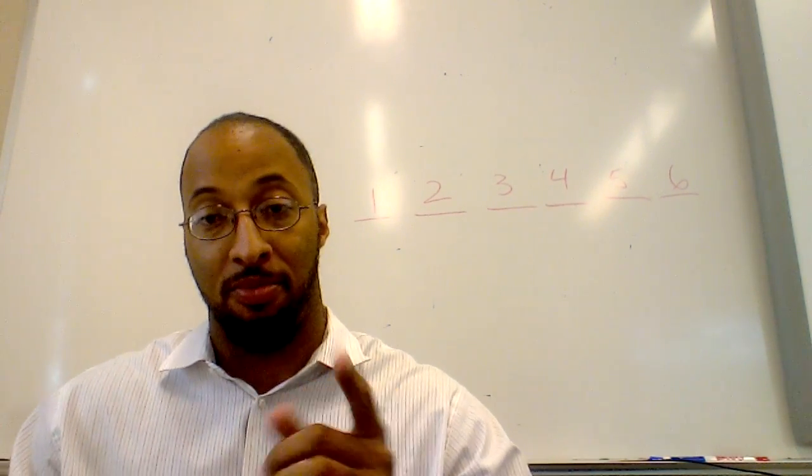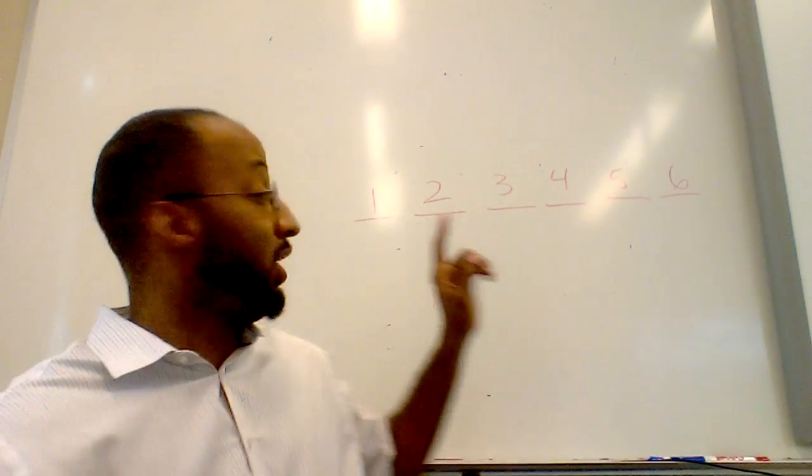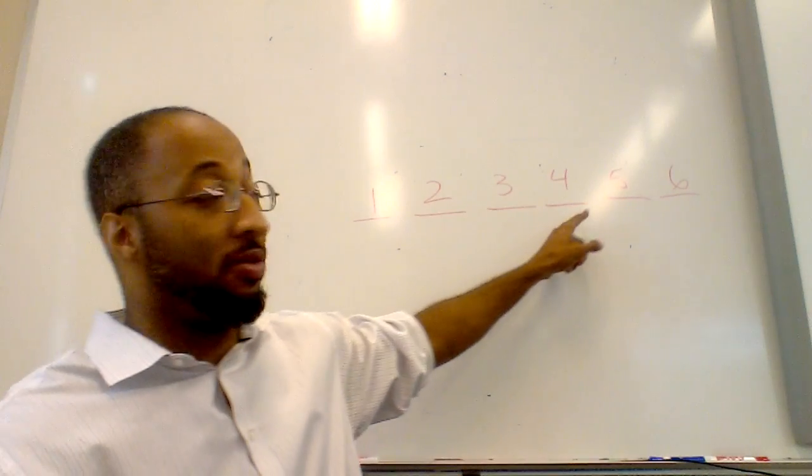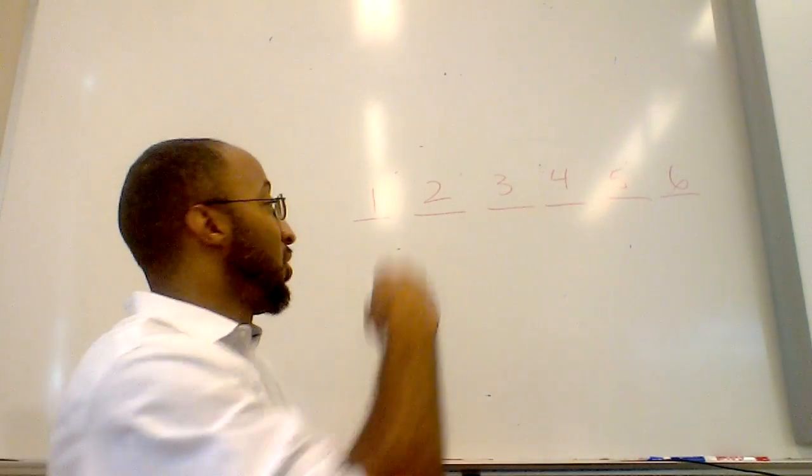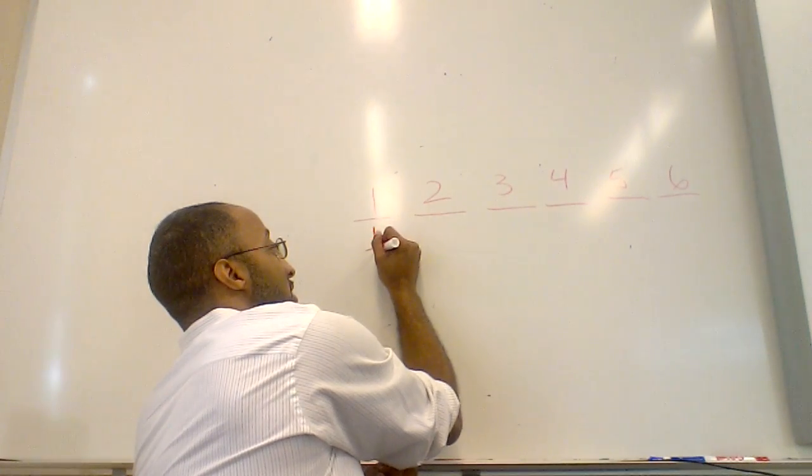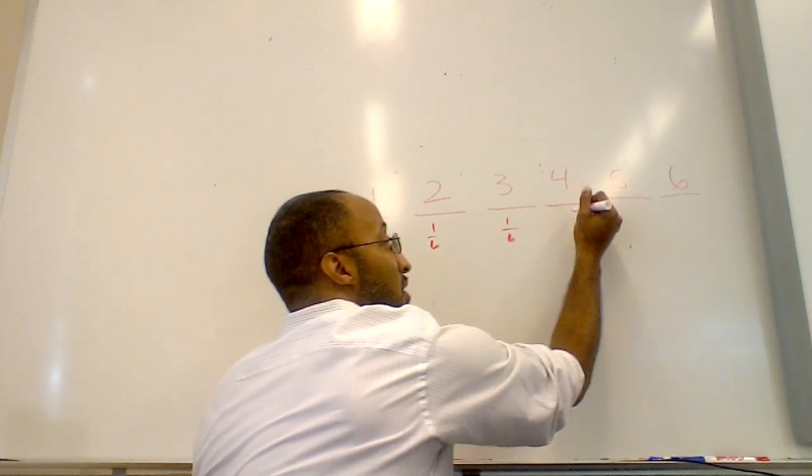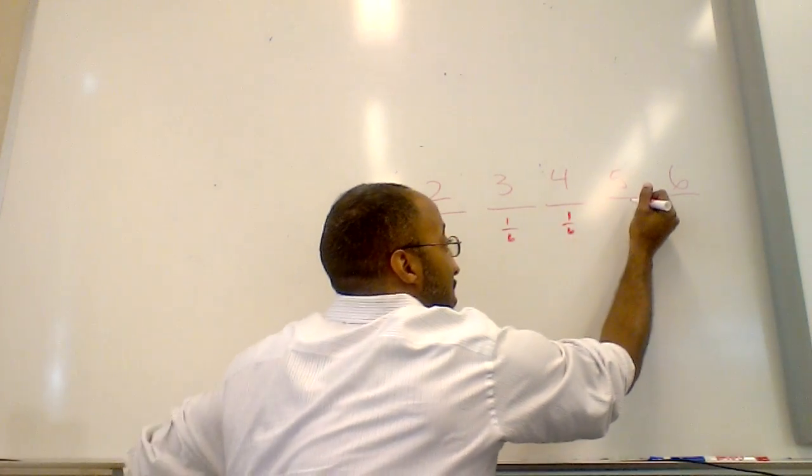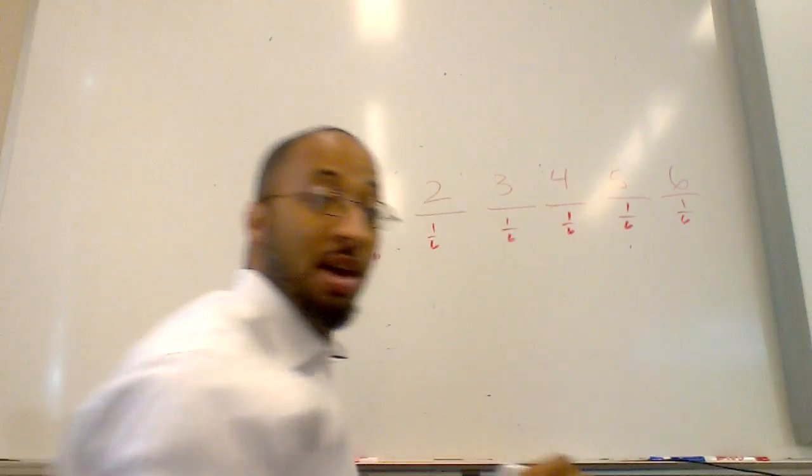We know that the probability of each one happening—one, two, three, four, five, and six—is one-sixth. So one-sixth and one-sixth and one-sixth, one-sixth and one-sixth and one-sixth.